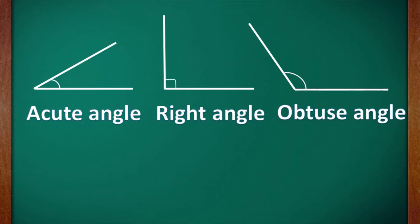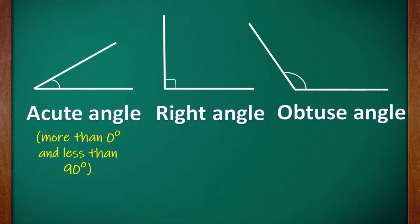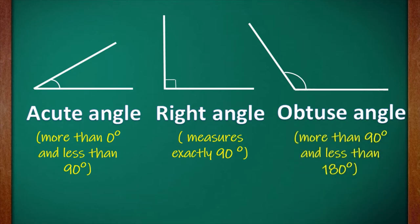These are the three angles which we had studied. The first one is acute angle — it measures more than 0 degree and less than 90 degree. Right angle measures exactly 90 degree. And the third angle is obtuse angle — it measures more than 90 degree and less than 180 degrees. These are the three types of angles which we had already studied.